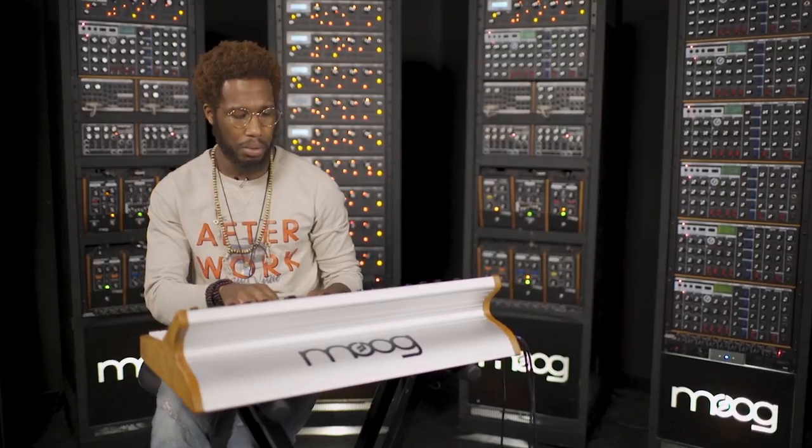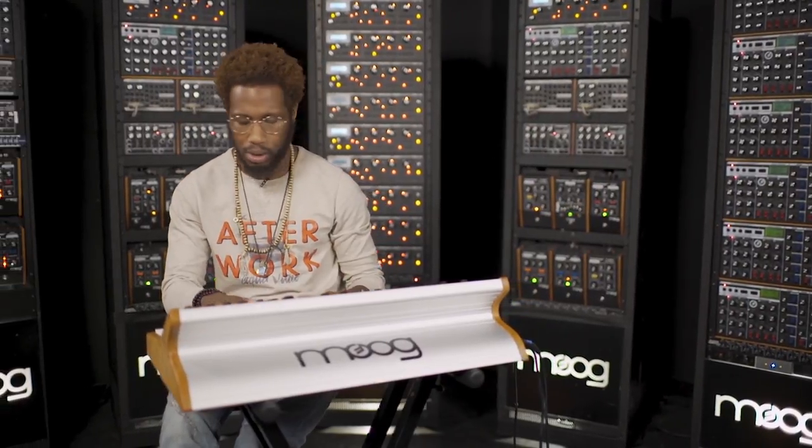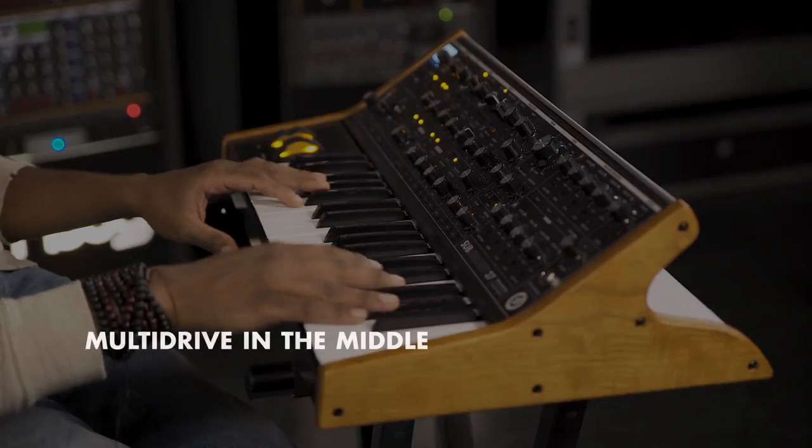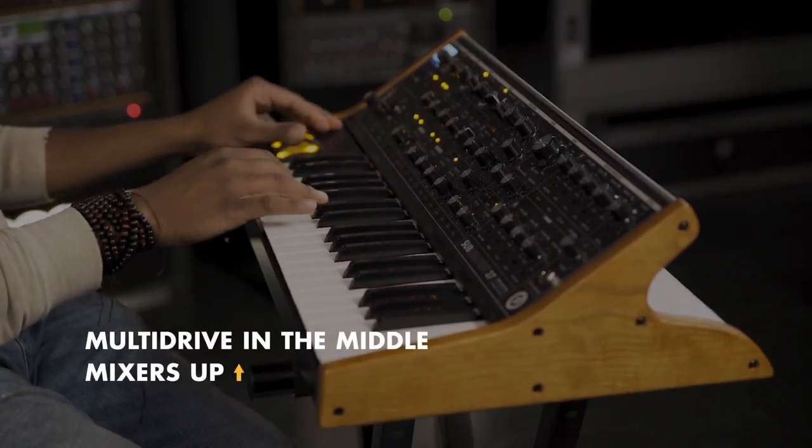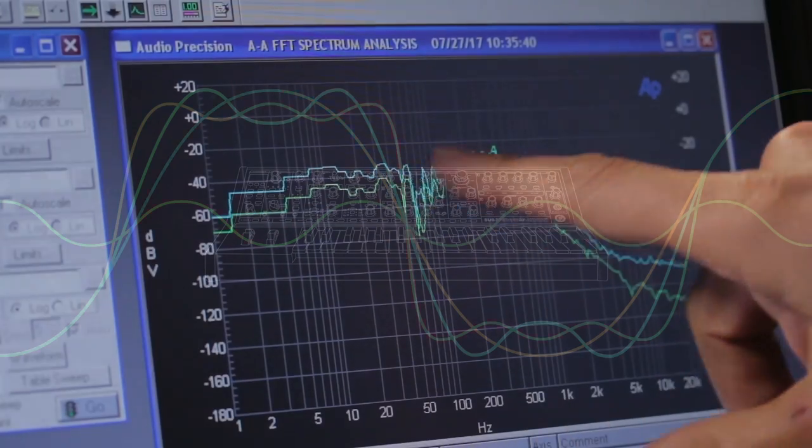The next change that we made was allowing the Subsequent 37's mixer to push the filter harder. Let's increase the mixer levels to around 8. You can start seeing that the sonic characteristics are changing.